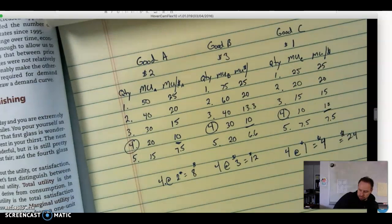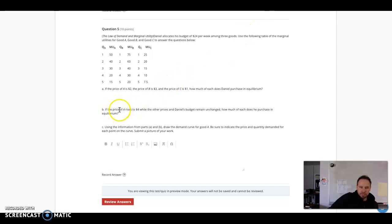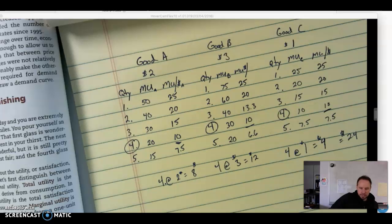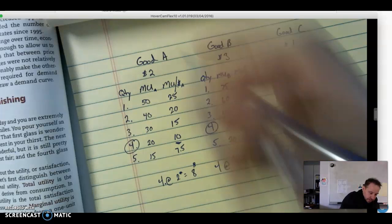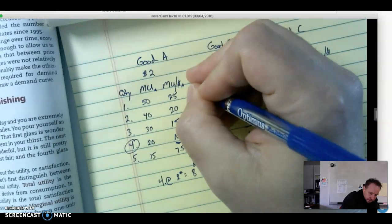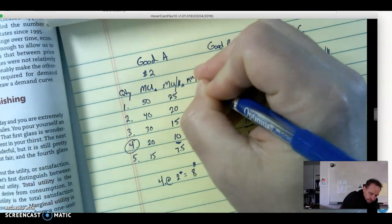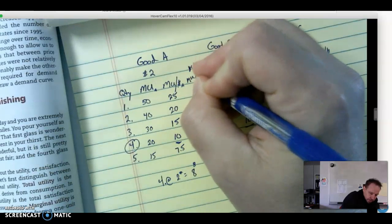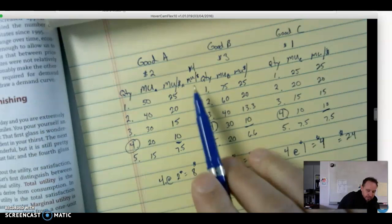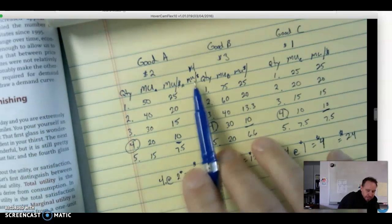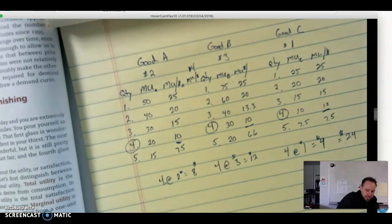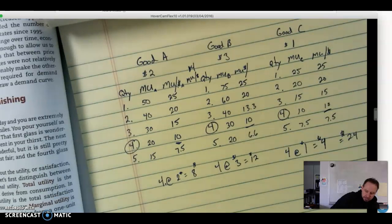Look at the other questions. If the price of A rises to $4 while the others stay, now we've got a little difference. We have marginal utility per dollar at a price of $4 because price is going up. So now we have to divide each of these by the new price. 50 divided by 4...